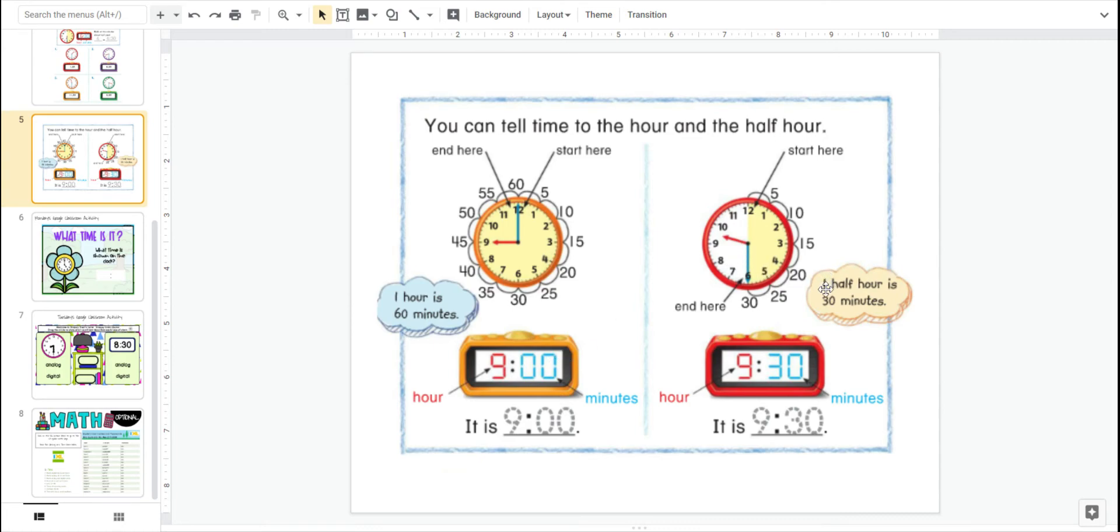Over here we have 30 minutes. Half hour. So the minute hand is all the way at the bottom touching the six. That way we know is 30 minutes or half past, however you'd like to say it. The hour hand is between the nine and the ten. So I look back on the clock. The number, it's already passed. And it's the nine. So it's 9:30.